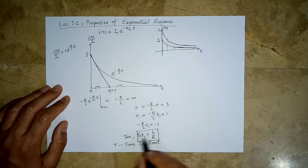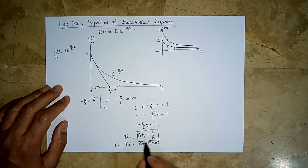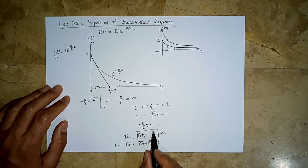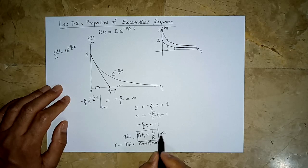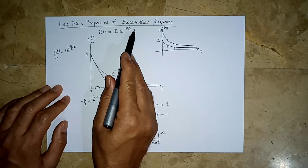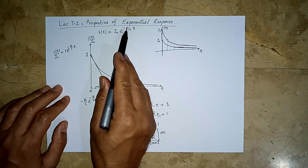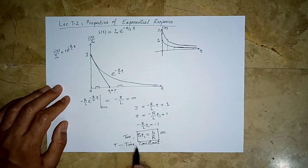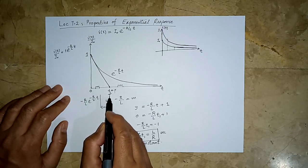The time constant is purely dependent on the value of inductance and the value of resistance — it is the ratio L over R. The units of tau are seconds, because it is the time at which the tangent line would become zero. The units of L over R are seconds: the units of R over L would be per second, making the exponent dimensionless since R over L times t gives a dimensionless quantity. Therefore tau has units of seconds.